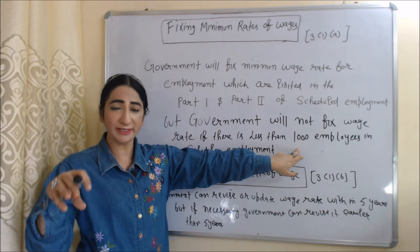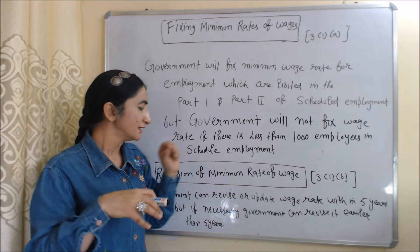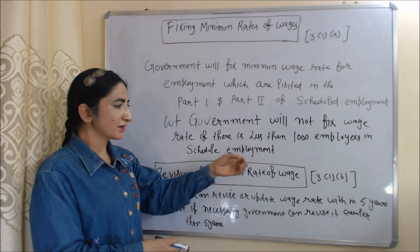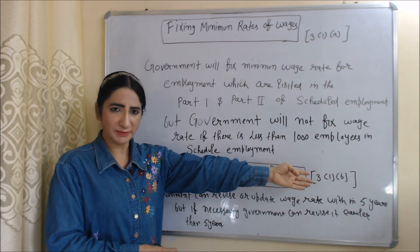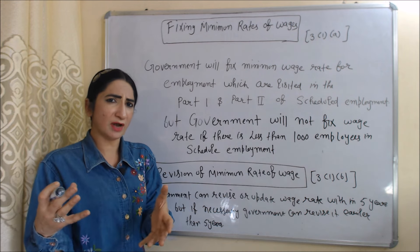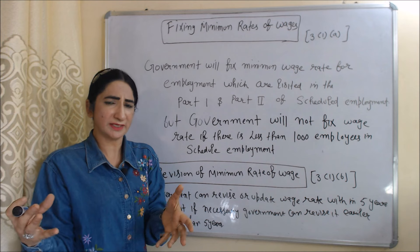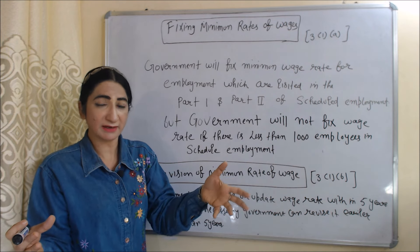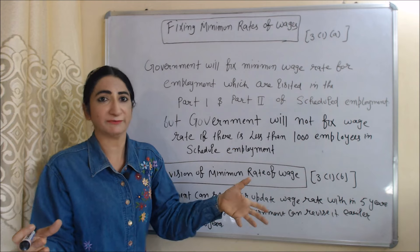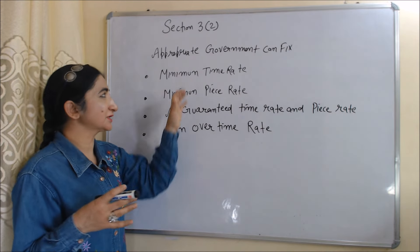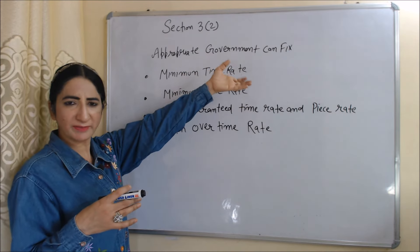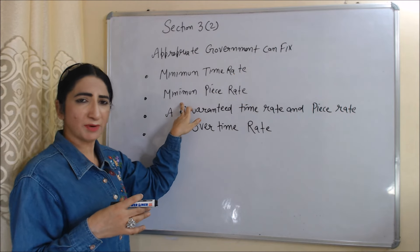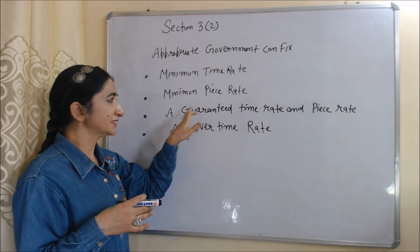Regarding revision of minimum wage rates, according to Section 3(1)(b), the government can revise or update a wage rate within five years, but if necessary, the government can revise it earlier than five years. According to Section 3(2), the appropriate government can fix a minimum time rate, minimum piece rate, a guaranteed time rate and piece rate, and overtime rate.